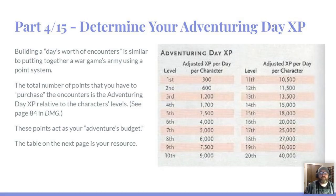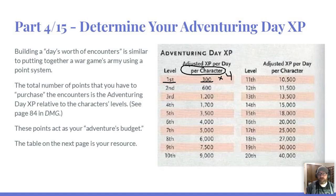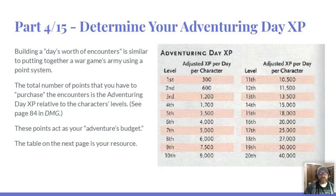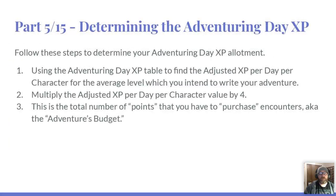The total number of points you have to purchase the encounters is the adventuring day XP relative to character levels — this is on page 84 of the DMG. This is going to be your adventure's budget. It's important to note that this is per character. If we wanted to make a first level adventure for four people, we'd look at first level, find 300 adjusted XP per day, and multiply by four — one for each character — giving a total budget of 1,200.